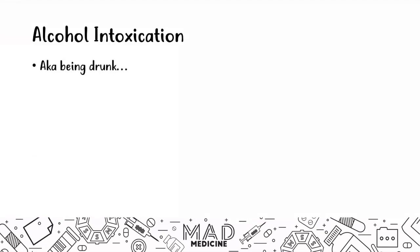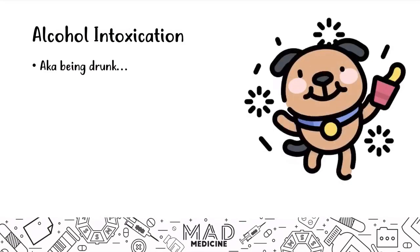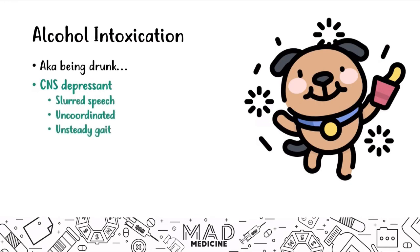Alcohol intoxication — aka being drunk — acts as a CNS depressant and leads to slurred speech, being uncoordinated, and having an unsteady gait. Coma can also occur in very high quantities, as well as altered mental status. All of this seems straightforward, except when presented in USMLE Step 1 vignettes it can be confusing because you may misinterpret it for another drug.